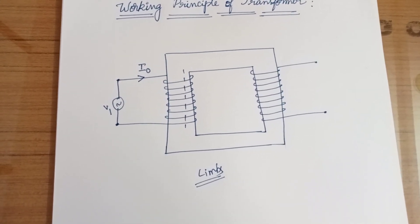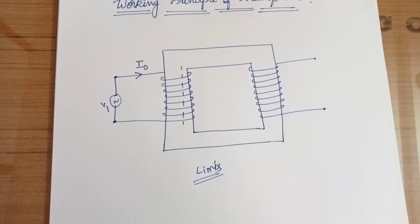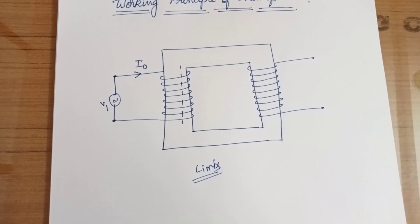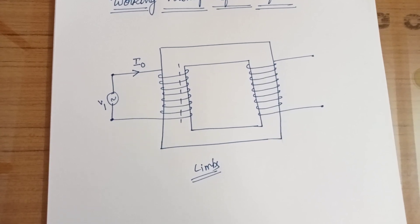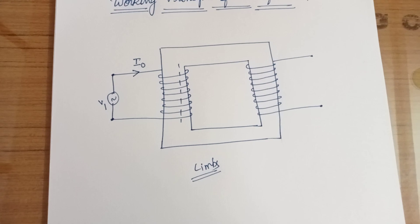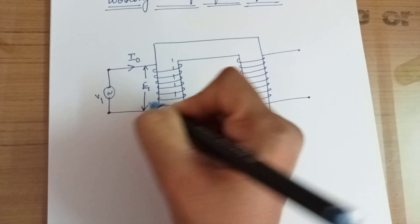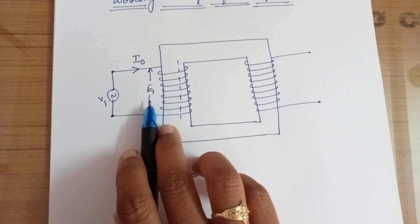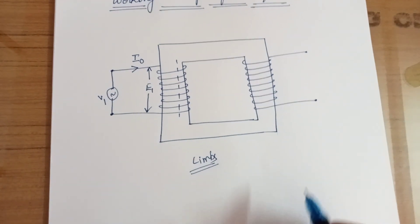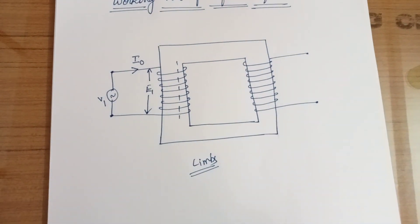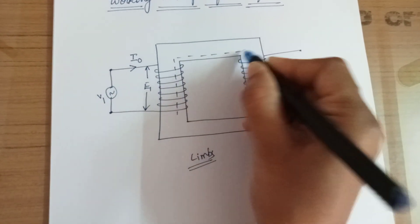We all know Faraday's law. The requirements of Faraday's law are: we need a conductor, we need a magnetic field, and we need relative motion between the magnetic field and the conductor. If all three requirements are met, an EMF will be induced across that conductor according to Faraday's law of electromagnetic induction. So an EMF has been produced across the primary — this is the primary induced EMF, and this is the no-load current.